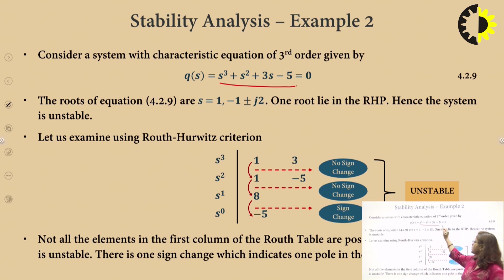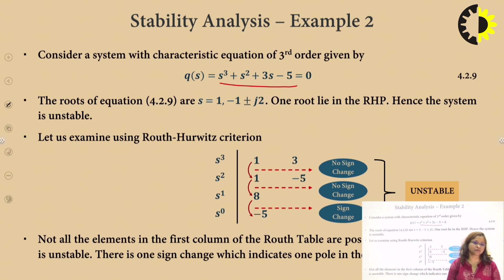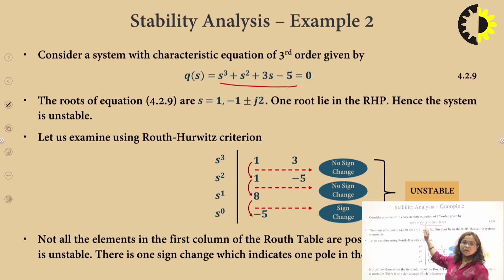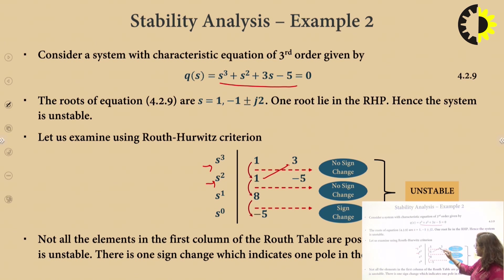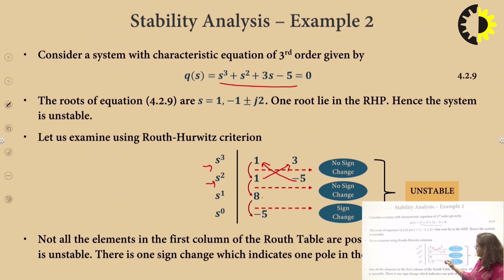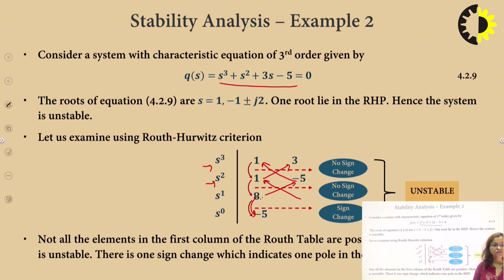Consider the example s³ + s² + 3s − 5. The s³ row has coefficients 1 and 3; the s² row has 1 and −5. The next element is (1×3 − (−5)) / 1 = 8. The following value is (8×(−5) − 0) / 8 = −5. Since there is one sign change, the system is unstable and one root is in the right half of the s-plane. We can verify: the roots of this equation are 1 and −1 ± j2, and one root is positive, confirming the system is unstable.